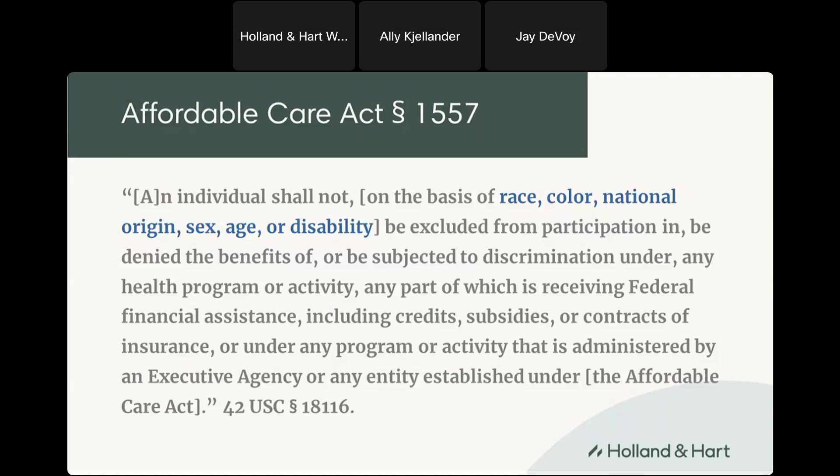What actually is Section 1557? Basically, it means that nobody can discriminate against somebody on the basis of race, color, national origin, sex, age, or disability.